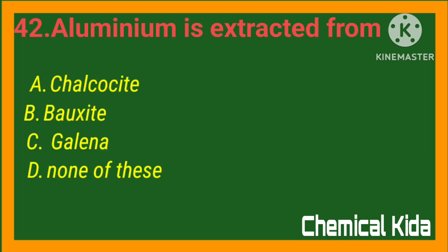Aluminum is extracted from: a) chalcocite, b) bauxite, c) galena, d) none of these. Answer: b) bauxite.